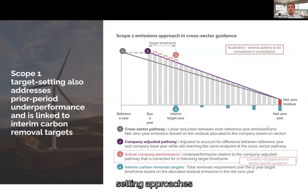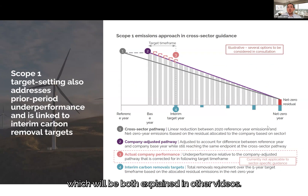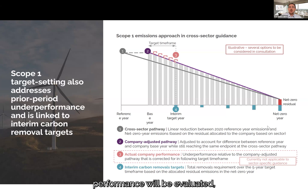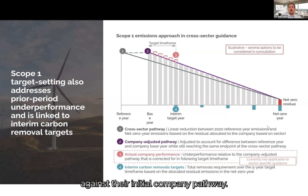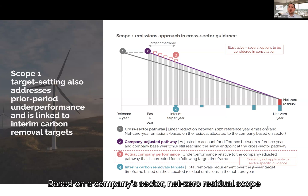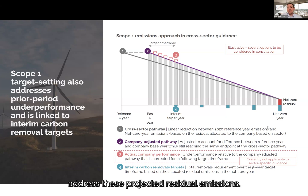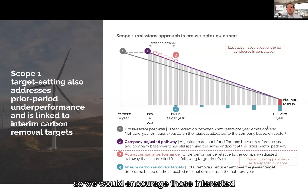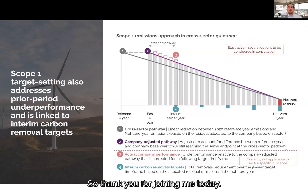These updated Scope 1 target setting approaches also interact with the updated target renewal process and proposed approaches to carbon removals, which will both be explained in other videos. At the end of the initial target setting period, company Scope 1 emissions performance will be evaluated and further options will be provided to address any underperformance against their initial company pathway. Based on a company's sector, net zero residual Scope 1 emissions may be allocated, and based on this allocation, companies may need to also address these projected residual emissions. Both Scope 1 renewal and removals are discussed in their own dedicated videos, so we would encourage those interested to visit those videos to learn more about those topics.